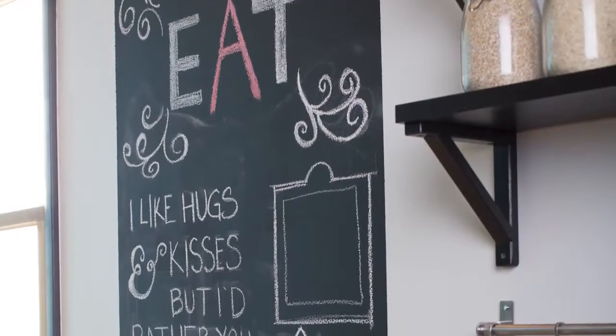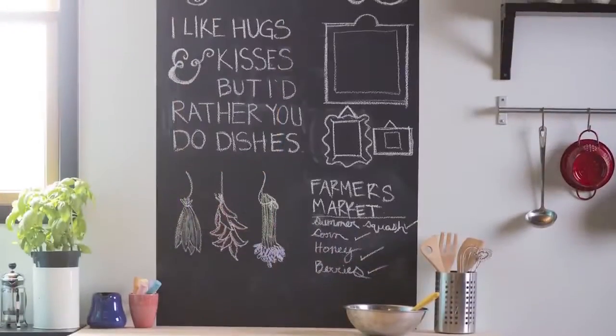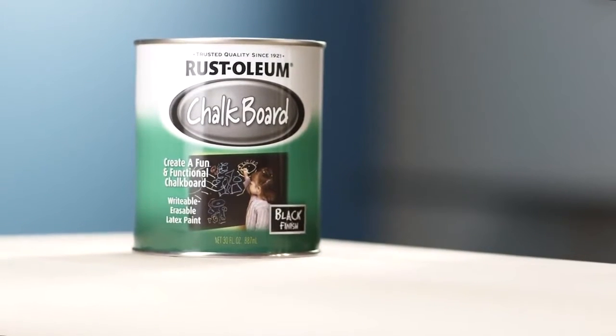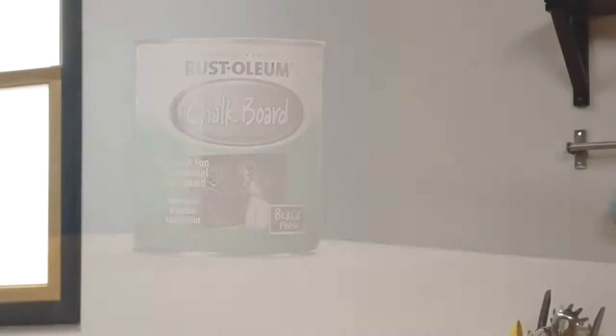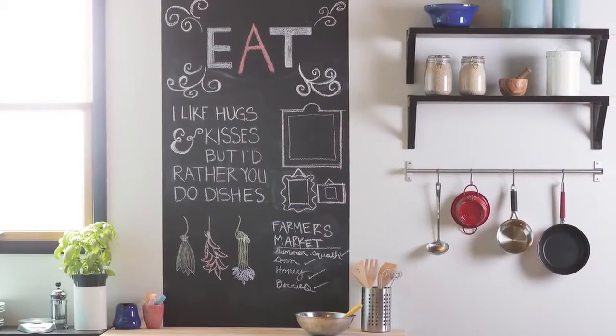Inspirational. Writable. Always functional. Transform a once forgotten place into a creative, productive space with Rust-Oleum Specialty Chalkboard Paint. Time to put the fun in functional, as you turn an ordinary surface into a chalkboard finish that you can enjoy for years to come.